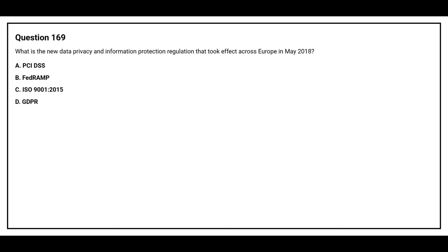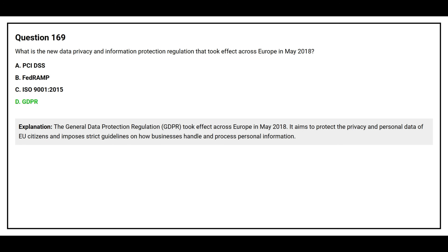Question number 169. What is the new data privacy and information protection regulation that took effect across Europe in May 2018? The correct answer is Option D, GDPR. The General Data Protection Regulation (GDPR) took effect across Europe in May 2018. It aims to protect the privacy and personal data of EU citizens and imposes strict guidelines on how businesses handle and process personal information.